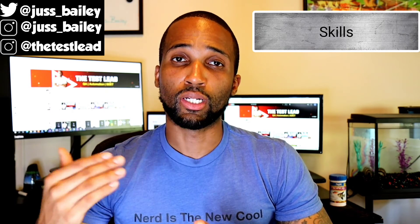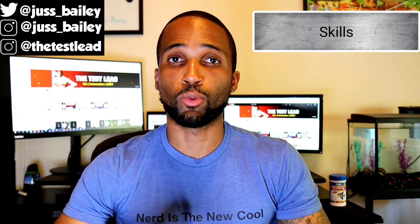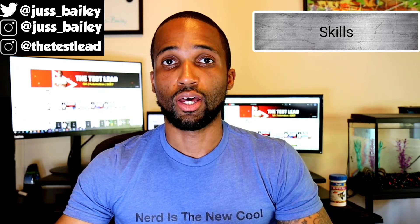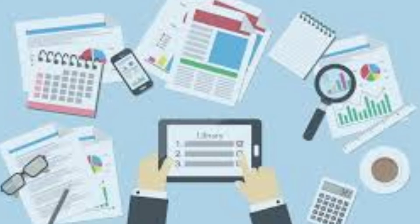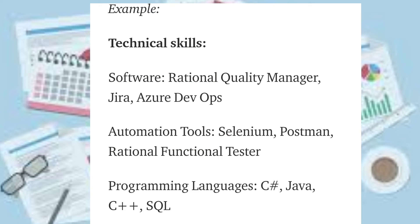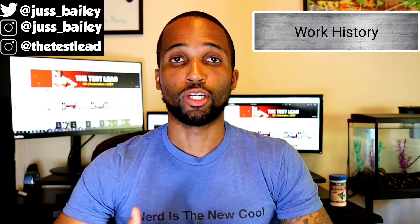In the skills section you want to list your hard skills and soft skills. Hard skills are technical skills; soft skills are interpersonal skills. An example of a hard skill is knowing a programming language; a soft skill example is being a fast learner. Look closely at skills listed in the job description you're applying for and add those to your resume so they show up in keyword queries. Technical skills examples include: software tools like Rational Quality Manager, JIRA, Azure DevOps; automation tools like Selenium, Postman, Rational Functional Tester; and programming languages like C#, Java, C++, and SQL.